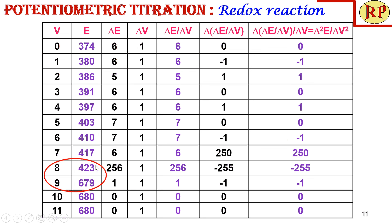We have determined approximately where the end point is from the first run, so we repeat the titration from just before that region — say from 7.5 ml — adding only 0.1 ml at a time to get an accurate end point. We can then directly plot EMF on the y-axis and volume of titrant on the x-axis to get a curve, though the end point may not be highly accurate from this plot alone. We can also go for the first derivative curve and second derivative curve.